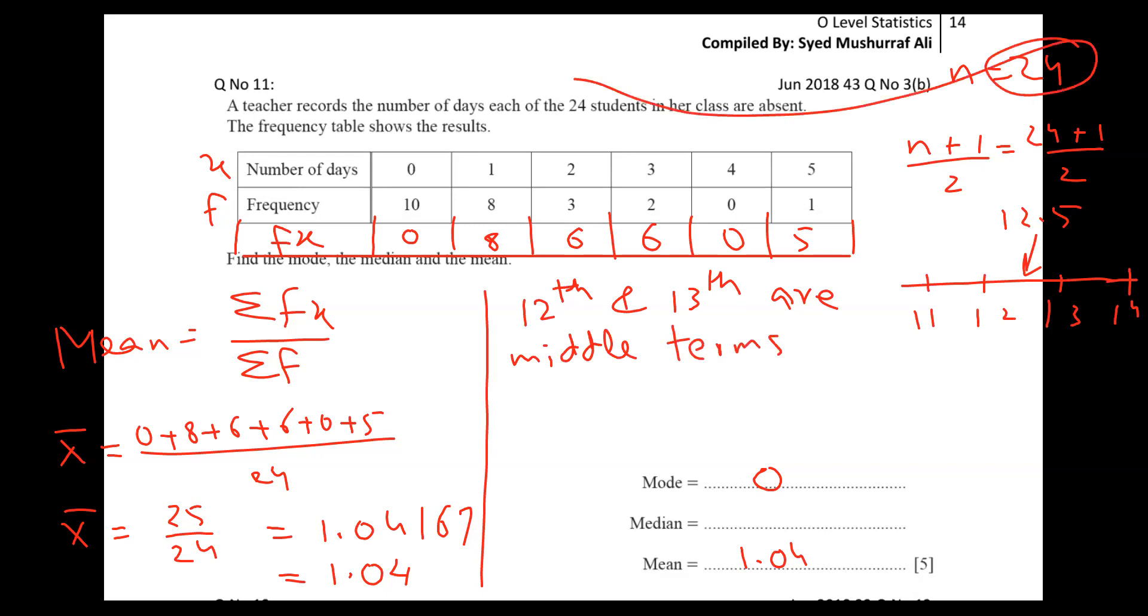Repeat again: I got this 24 from where? Because there's 24 when we add all frequencies. After this, I put in formula n plus 1 by 2. Fixed formula: 24 plus 1 is 25, by 2 I got 12.5 in the middle. So 12th term and 13th term is our middle term. Now the question comes, how to find it? I will add these frequencies until I get 12 and 13.